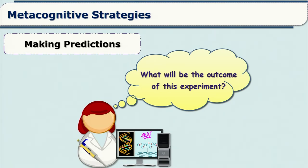Making predictions and forming hypotheses is another metacognitive strategy. A hypothesis is an intelligent guess. We need to make students make predictions before starting an experiment — for example, asking what will happen if A is added to B. In language learning, looking at newspaper headings and predicting what an article might be about are useful exercises. All these exercises help to enhance metacognition.